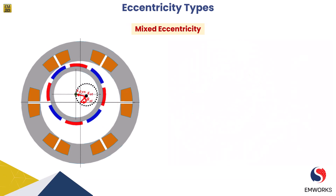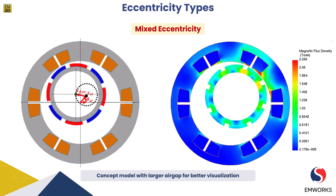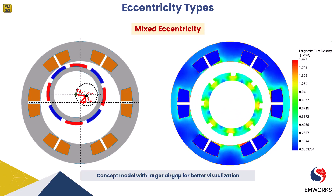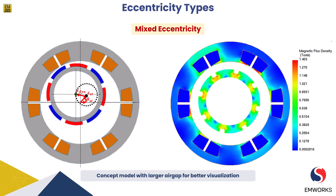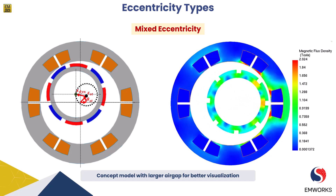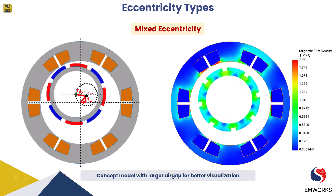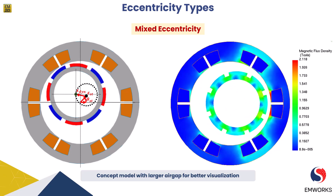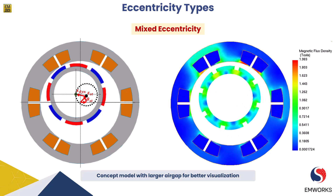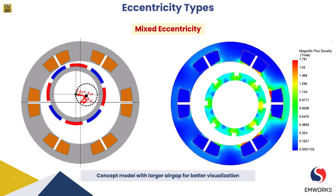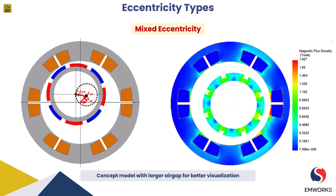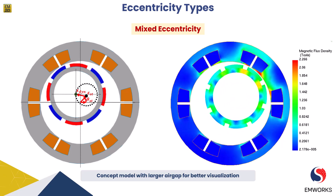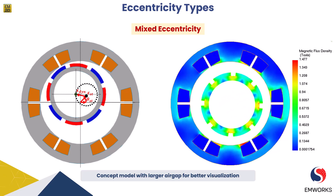The third type is mixed eccentricity, which is a combination of both static and dynamic eccentricity. There is a fixed displacement in the rotor as the static component, as well as a varying displacement based on the dynamic component. In this case there is a fixed offset between the rotor and stator centers as well as additional variations during rotation. Mixed eccentricity can arise from a combination of factors such as misalignment during motor assembly and subsequent dynamic changes caused by operating conditions or mechanical wear.